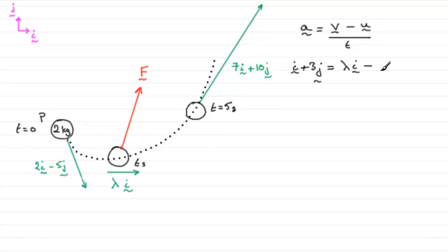Now, we subtract the initial velocity, which was 2i minus 5j. And we know that this change in velocity took place over a period of t seconds, so we just put t there.